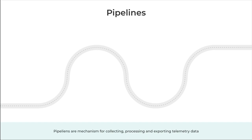Next, let's take a look at pipelines. Pipelines are the mechanisms for collecting, processing and exporting telemetry data. They play a crucial role in the observability framework.